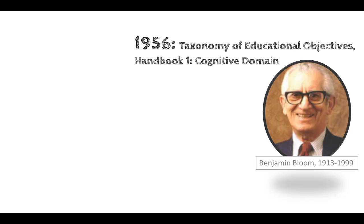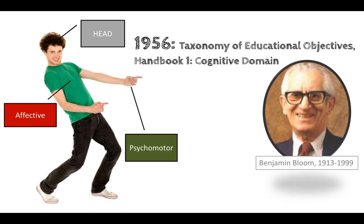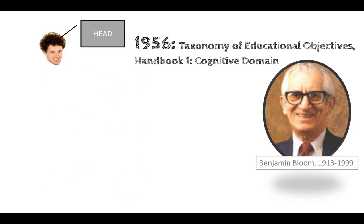In this model, there are three different categories of learning: the cognitive, the affective, and the psychomotor — some call them the head, the heart, and hands of learning. In education, we tend to focus on the cognitive domain, the head. There are six levels of educational objectives in this classification, better known as Bloom's taxonomy.